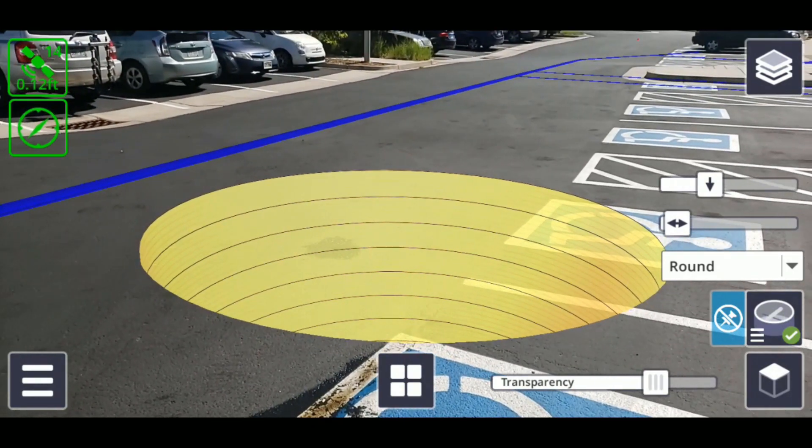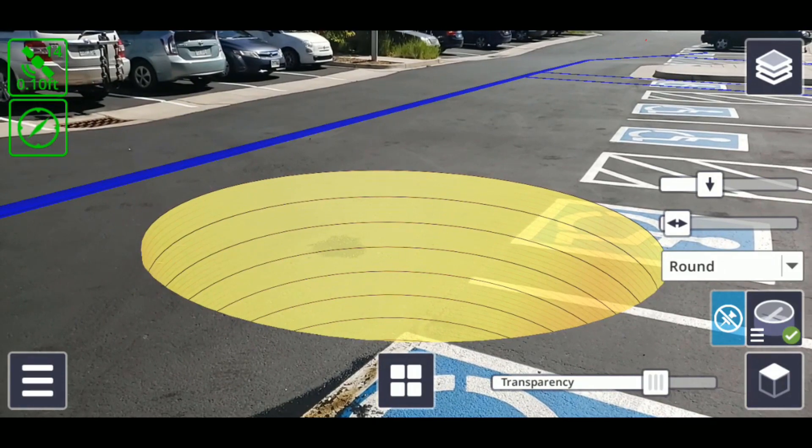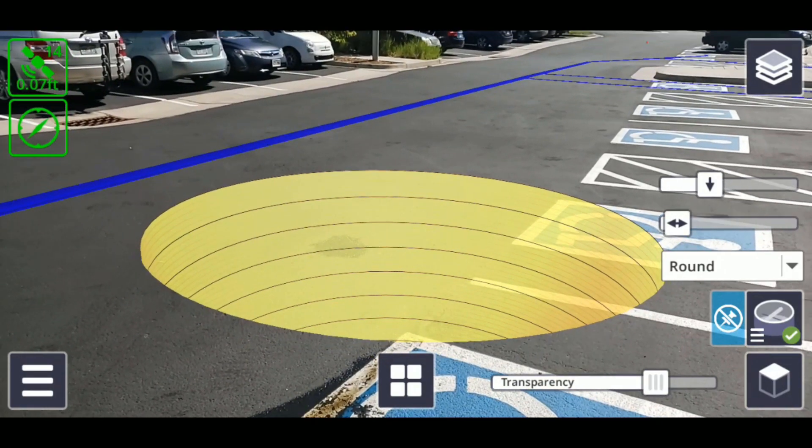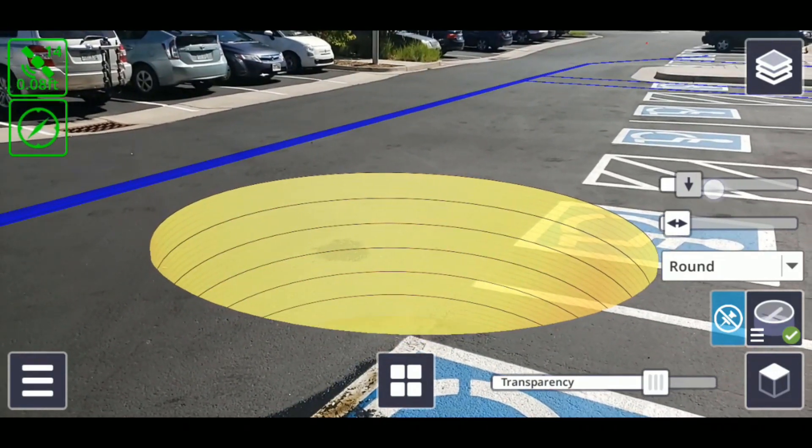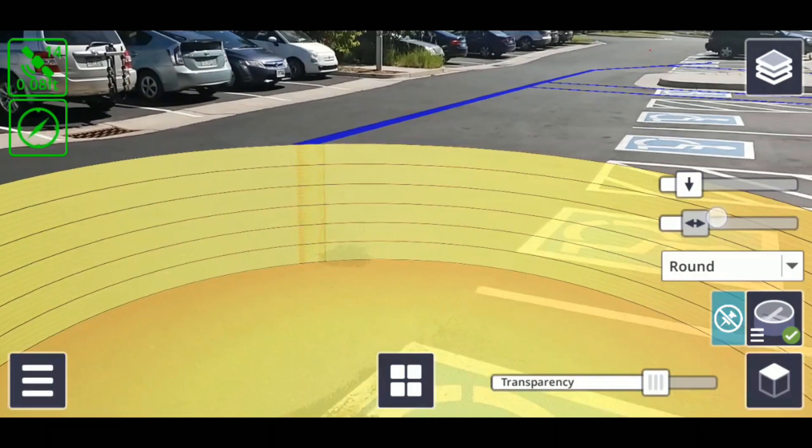Firstly, there are two additional sliders: one with a downward facing arrow, which controls the depth of the pit, and another with an arrow that points left and right, which controls the diameter of the pit.